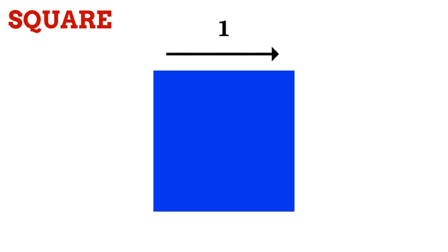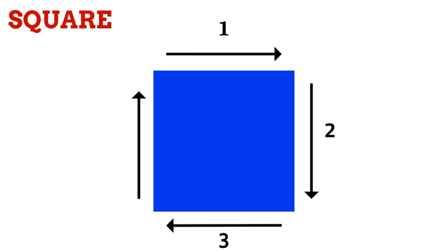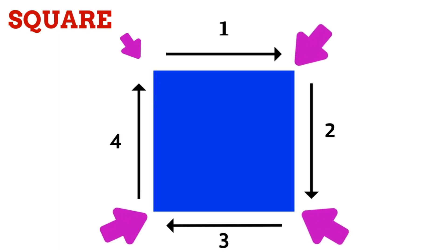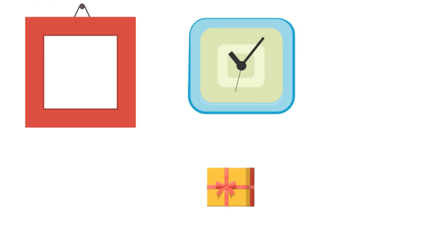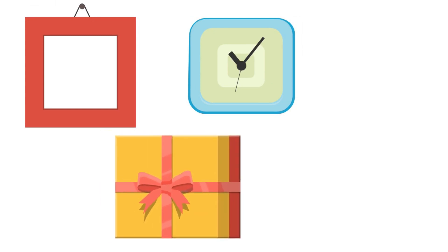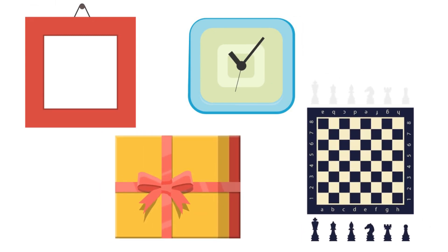Square. Square has 4 sides: one, two, three, four. Square has 4 corners. Square is all sides equal. Photo frame, clock, gift box, chess board — these are all square examples.